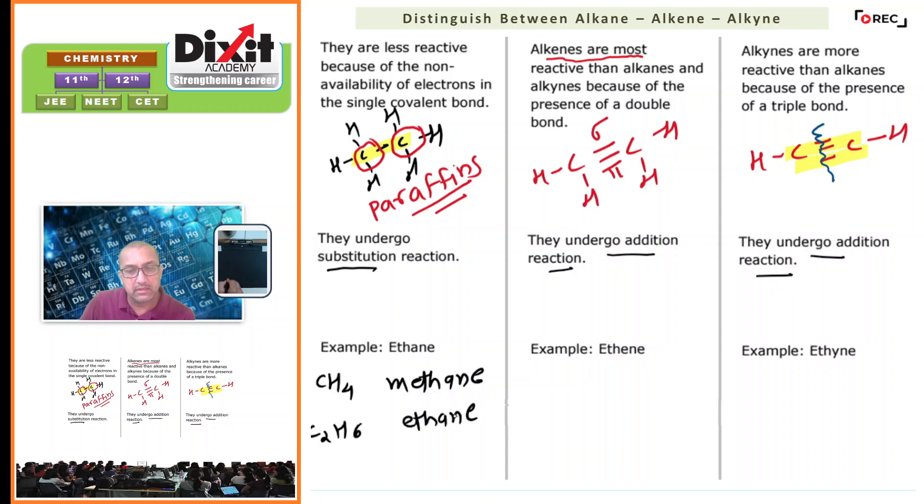In the case of alkenes, the examples are CH2=CH2, which is known as ethene, and the other example is CH3-CH=CH2, which is known as propene.